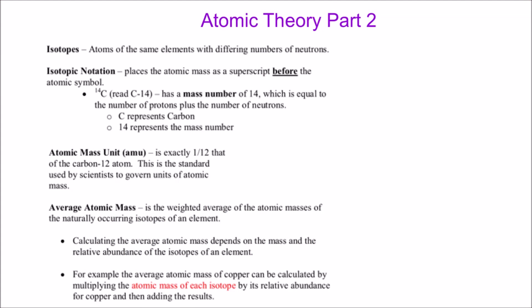Welcome to part two of the atomic theory series. We're going to talk about isotopes. In John Dalton's atomic theory he said that all atoms of the same element are exactly identical, but we found out that's not entirely true. Elements can have different numbers of neutrons, and if an element has a different number of neutrons we call it an isotope.